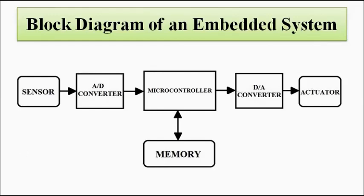That output is given to the actuator. Actuators convert the output of the microcontroller into suitable control action — it can be movement: rotatory, linear, on and off, sliding — anything. We have discussed about actuators in the electrical machines section, also in sensors, transducers, instrumentation, and in process control. Here we will discuss some examples with the help of which you will have a good idea of how this embedded system technology is used in various systems.